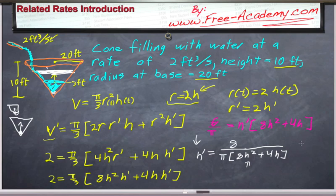So if we say we want to find the rate of change of the height at the very bottom, when, say, h = 1 foot, we would get h' is equal to 6 over [8π + 4π]. And this would equal 6 over 12π, or 2 over 3π.